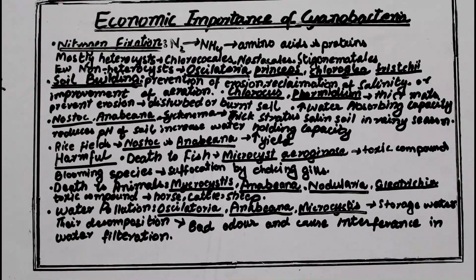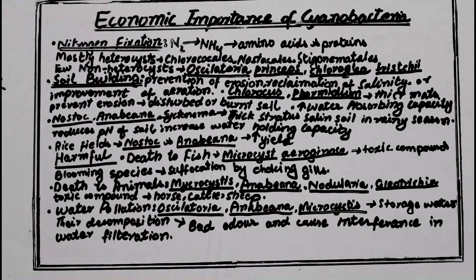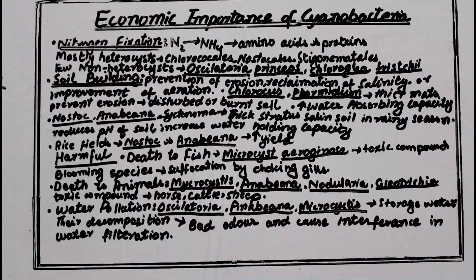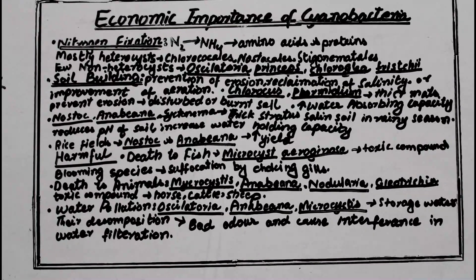The first most important beneficial effect of cyanobacteria is nitrogen fixation, because they are capable of nitrogen fixation. They absorb atmospheric nitrogen and convert it into ammonia, nitrates, and nitrites, because many animals, plants, and other organisms use nitrates or nitrite form. It is converted into ammonia and then from ammonia to amino acids and proteins. Heterocyst-containing cyanobacteria have heterocysts in their filaments from the orders Chroococcales, Nostocales, and Stigonematales — these four orders contain nitrogen-fixing heterocyst cyanobacteria.